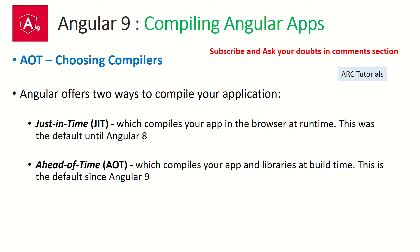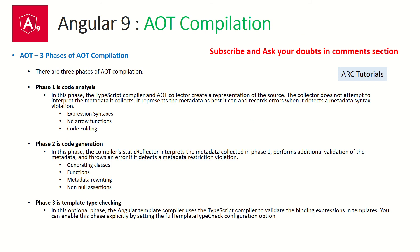When we say ahead-of-time compilation, what happens exactly? AOT compilation is done in three parts. The first part is code analysis. In this phase it does not do anything drastic — it will just collect the metadata and analyze it, and will not give you any error at this stage.